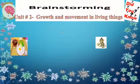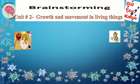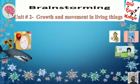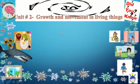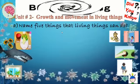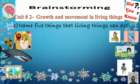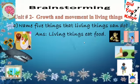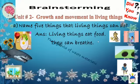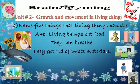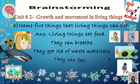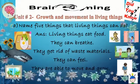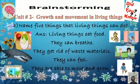Unit number 2: Growth and Movement in Living Things. Name five things that living things can do. Living things can eat food, they can breathe, they can get rid of waste materials, they can feel, and they are able to move and grow.